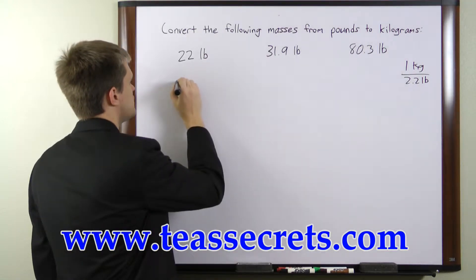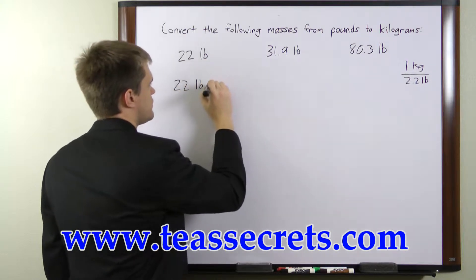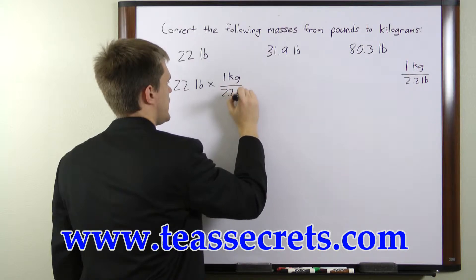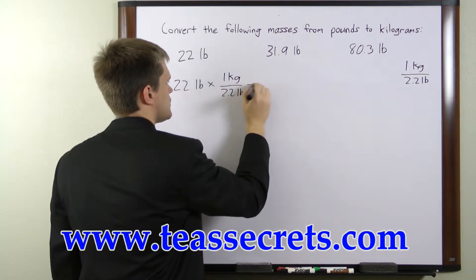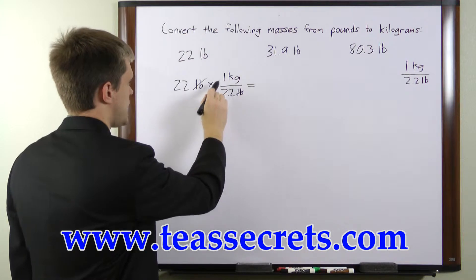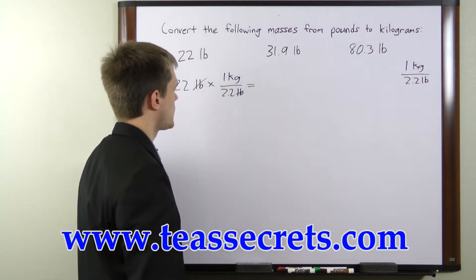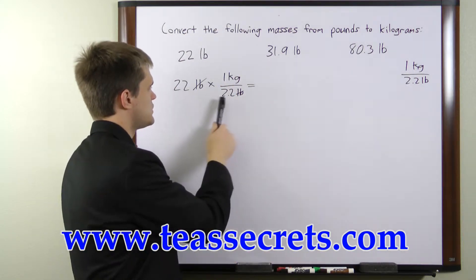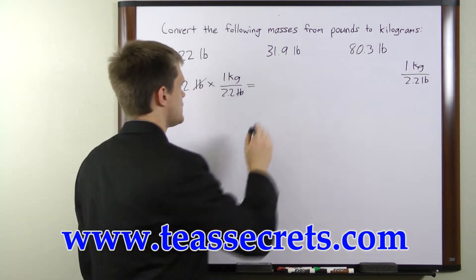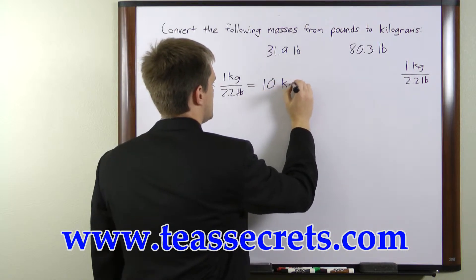First we have 22 pounds. 22 pounds times 1 kilogram per 2.2 pounds — the pounds will cancel, leaving us with 22 times 1 kilogram divided by 2.2. So 22 divided by 2.2 is going to be 10, giving us a mass of 10 kilograms.